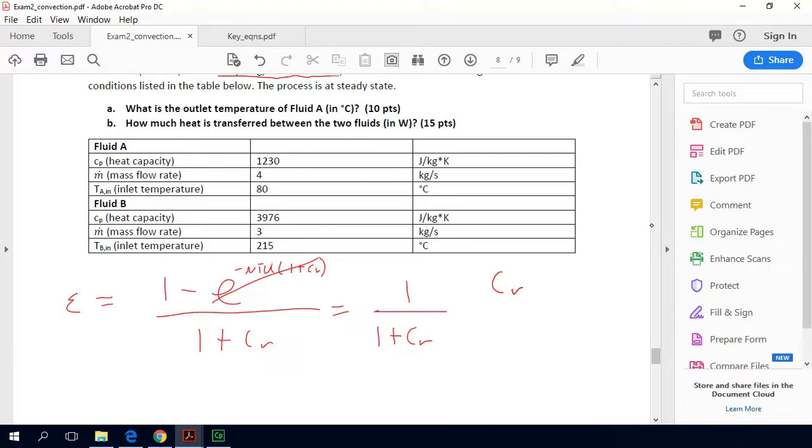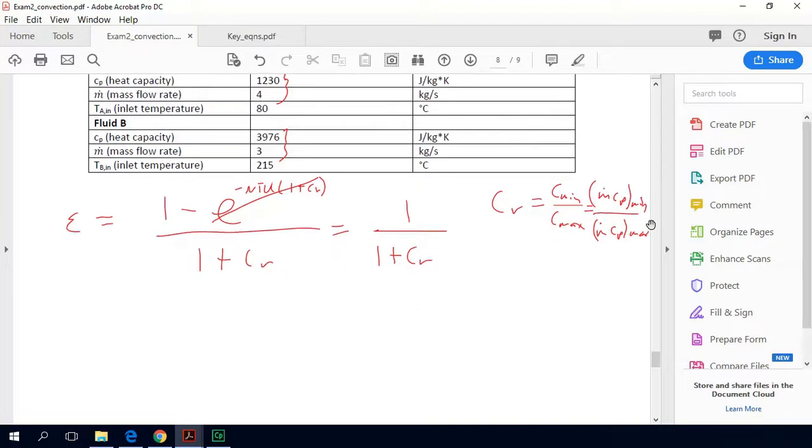So our CR is defined as this minimum heat capacity rate divided by the maximum heat capacity rate, which is m dot Cp min divided by m dot Cp max. So if we're just looking by inspection and doing some estimates in our heads, we can see that when we multiply these two things together for fluid A, we're getting a number of about 5,000 watts per Kelvin. And for fluid B, we're getting a number more like 12,000. So our fluid A is our minimum heat capacity rate.